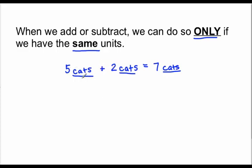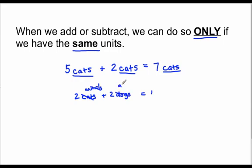If I don't have the same units, I cannot add or subtract. For example, if I have two cats plus two dogs, I cannot say that I have four cats or four dogs. However, if I say that cats are animals and dogs are animals, and I say I have two animals plus two animals, now I can add them up because I'm talking about the same unit, which is animals. When I put two animals together with two more animals, I get four animals. The only way that you can add or subtract is if you have the same units.